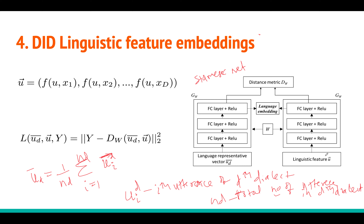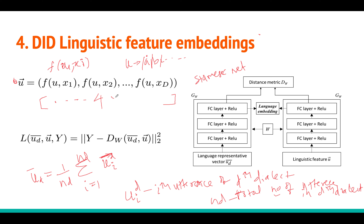The key question is: what is u exactly? U is a feature vector. The function F(u, x_i) counts how many times a particular element x_i — say a phoneme — occurs in utterance u. For example, if phoneme A occurs 4 times in that utterance, you put the number 4 at that position. By doing this for all phonemes you create a list of numbers — a feature vector.